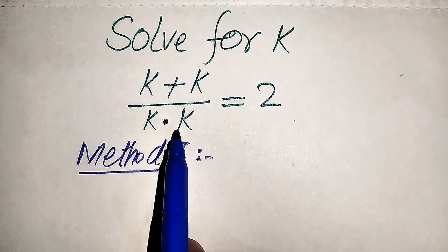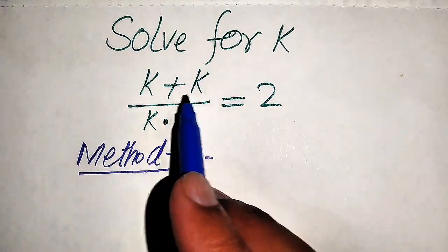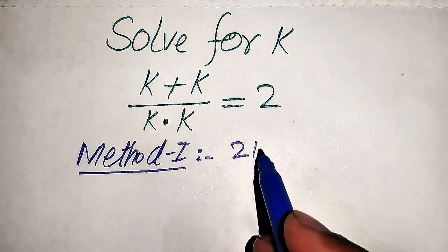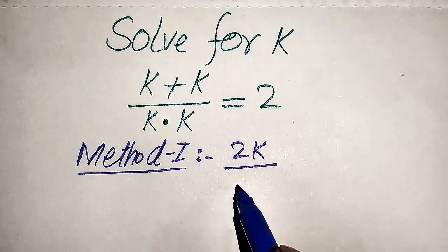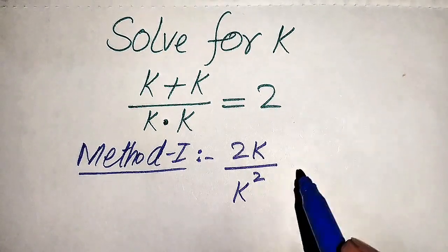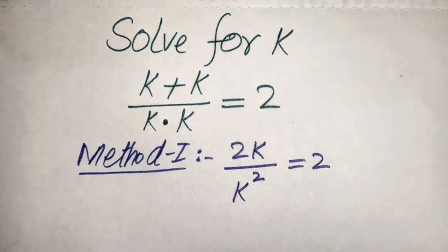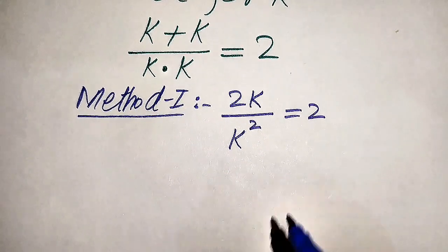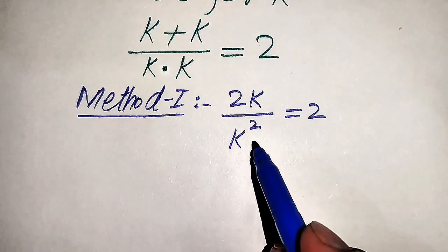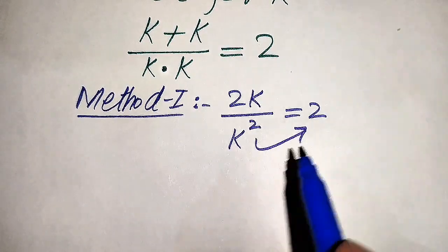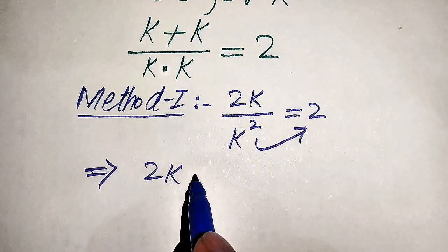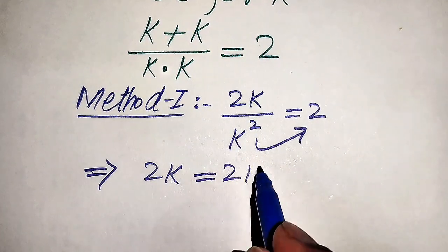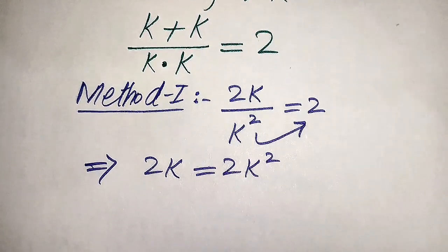Here we have k plus k divided by k multiplied by k. When we add k with k it will be written as 2 times k, divided by k times k which becomes k squared, and this whole equation equals 2. In the next step, k squared moves from the left hand side to the right hand side as multiplication, giving us 2k equals 2 times k squared.